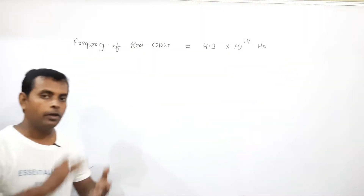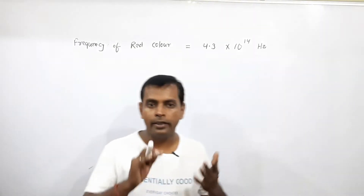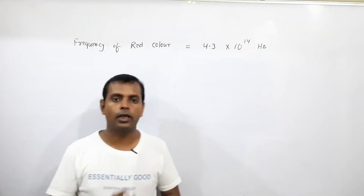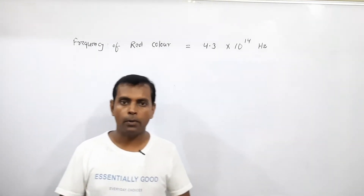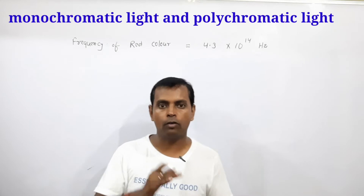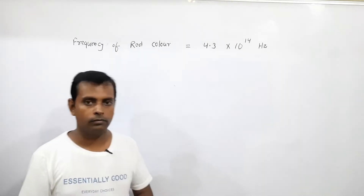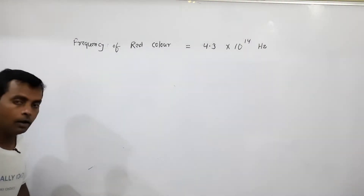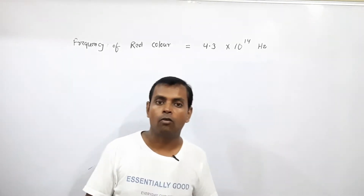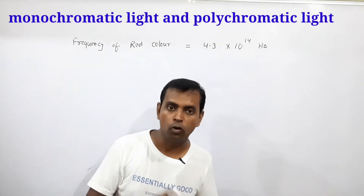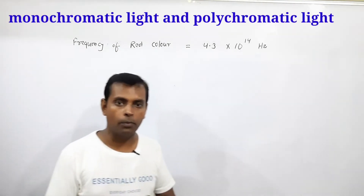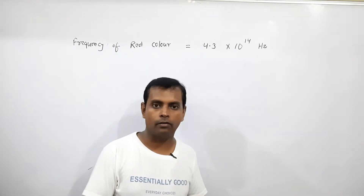Keeping all these things in mind, light has been divided into two types: monochromatic light and polychromatic light. Today's topics are: what is monochromatic light, and what is polychromatic light.